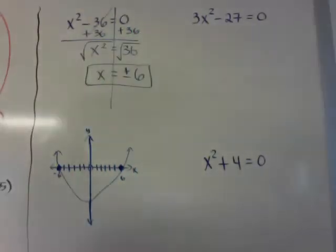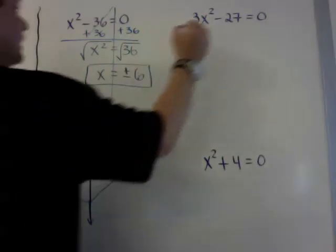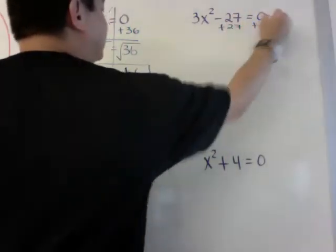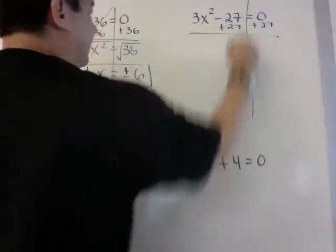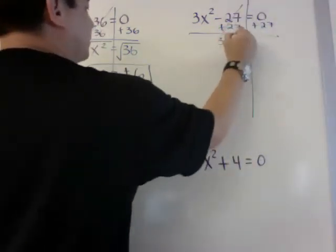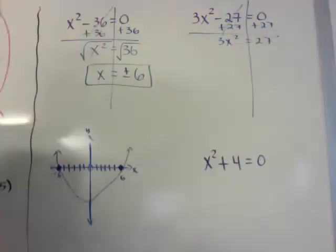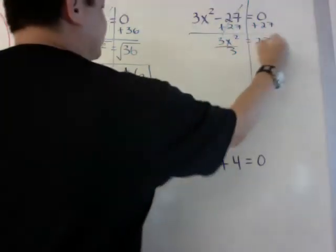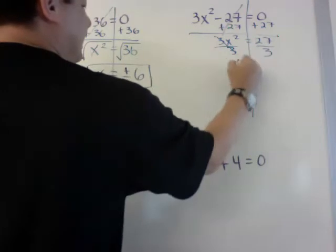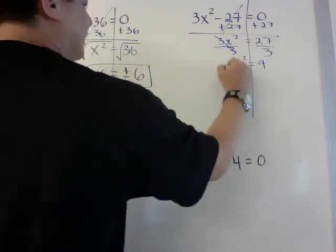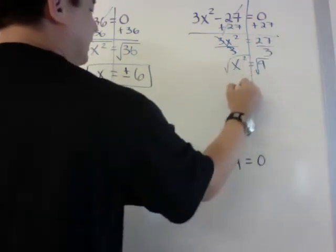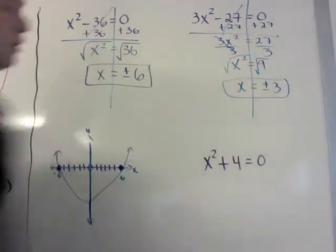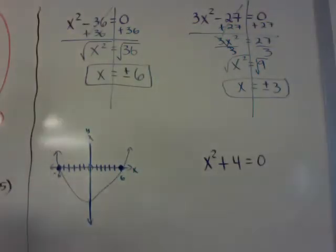If I have another problem that looks like this, I need to isolate the x. So I'm going to plus 27 to both sides, get rid of that, and I'm going to get 3x² = 27. I want x by itself, so I'm going to divide by 3 to get rid of this, and then I get x² = 9. And when I take the square root of 9, x is going to equal plus or minus 3. And again, don't forget that plus or minus, so I have two roots.